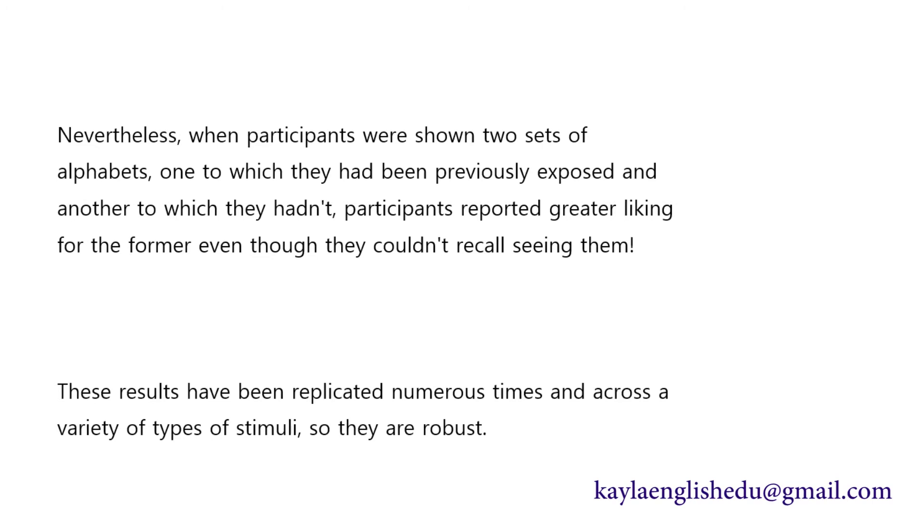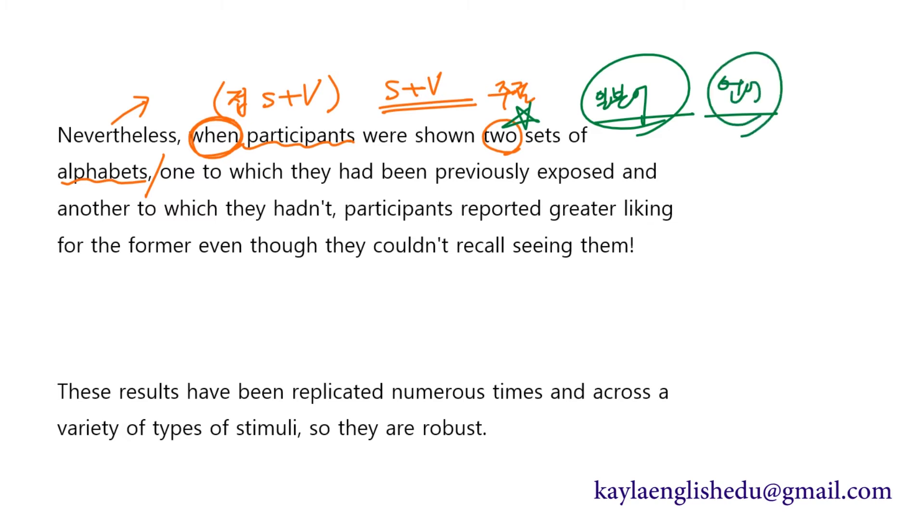Nevertheless, when participants were shown two sets of alphabets. Nevertheless는 그럼에도 불구하고 이런 뜻이거든요. 근데 when 하면서 접속사가 나와있어요. 그러면 when 하고 관련되는 문장, 주어가 동사할 때 요거부터 찾고 그 뒤에 주절이 따로 있다라는 거죠. 참여자들이 두 세트의 알파벳에 노출됐을 때 그런데 일본어 알파벳 이 얘기가 나와있었거든요. 그런데 이거가 하나가 아니라 two set이라고 그랬어요.